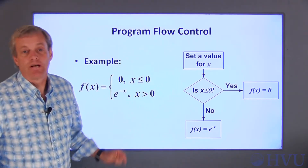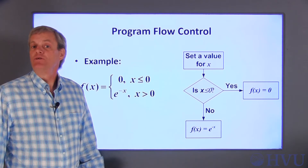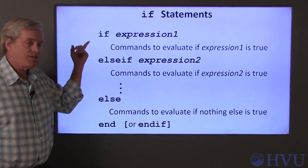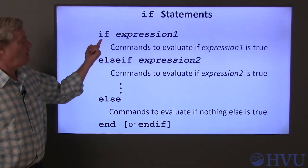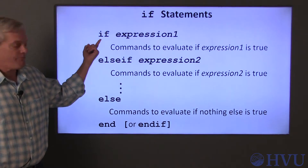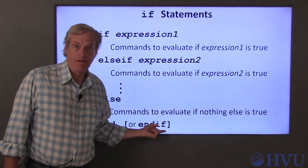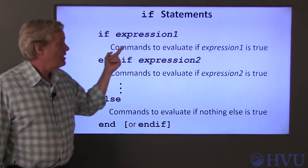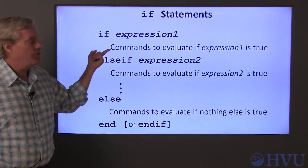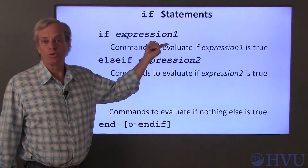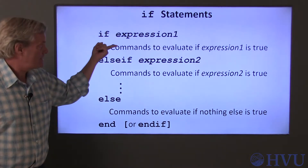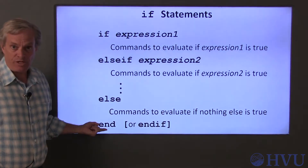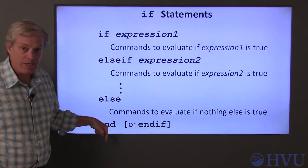Next, let's look at a programming structure — an IF block — that can be used to implement this kind of decision making process. This is the most general form of an IF structure. The structure always starts with the word IF and ends with the word END or ENDIF. The IF statement is followed by an expression that evaluates to either TRUE or FALSE. Below this IF statement are a set of commands that are executed if the expression is TRUE. If the expression is TRUE, these statements get executed, the IF block execution terminates, and the program jumps out of the IF structure and continues executing any code below the END statement.